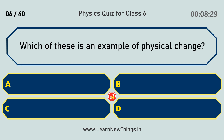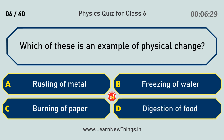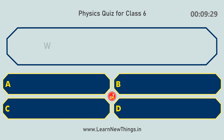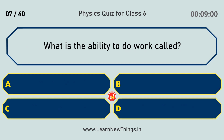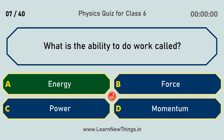Which of these is an example of physical change? Freezing of water. What is the ability to do work called? Energy.